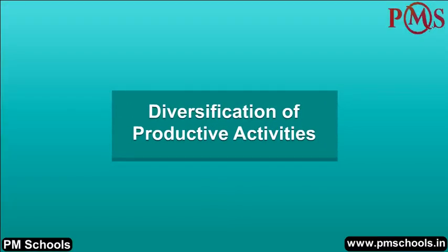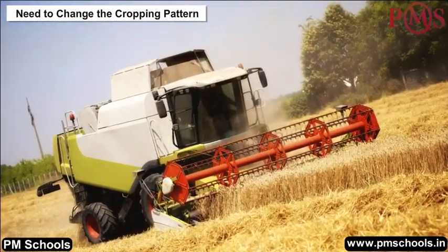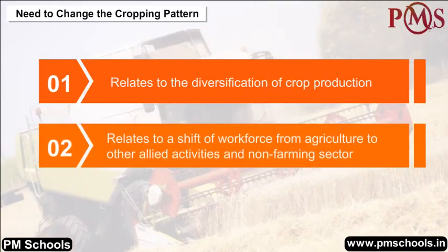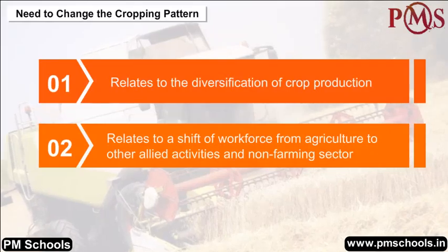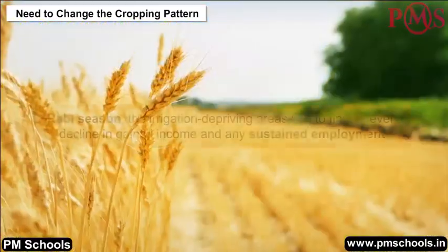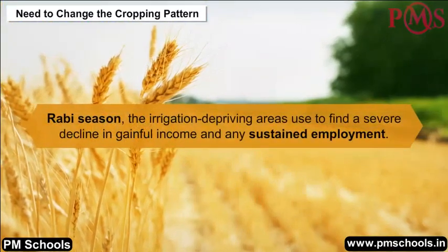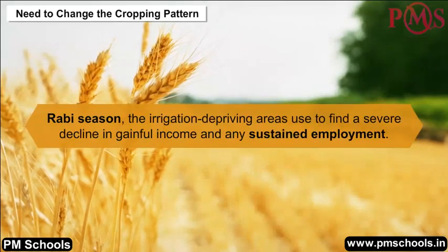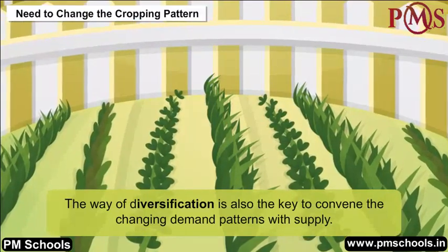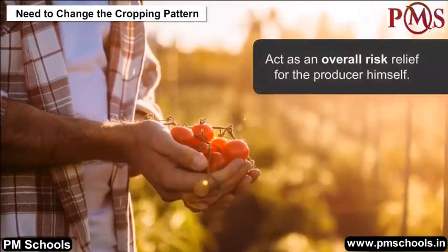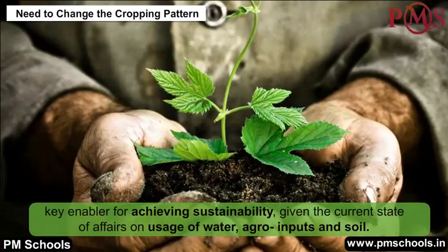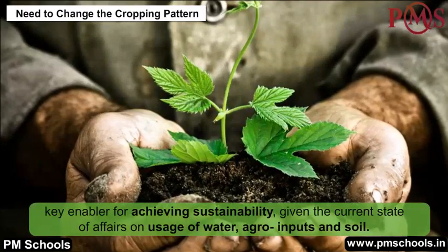Diversification of Productive Activities: Diversification includes two aspects. First, it relates to the diversification of crop production, and second, it relates to a shift of workforce from agriculture to other allied activities and the non-farming sector. Excluding the kharif season, areas concentrated on employment activities during the rabi season face a severe decline in gainful income. Diversification is key to matching changing demand patterns with supply and acts as overall risk relief for the producer, and is also a key enabler for achieving sustainability given the current state of water, agro-inputs, and soil usage.